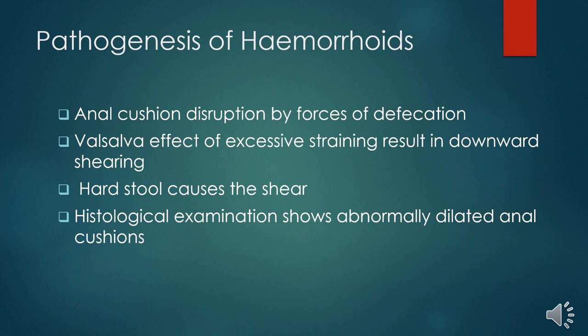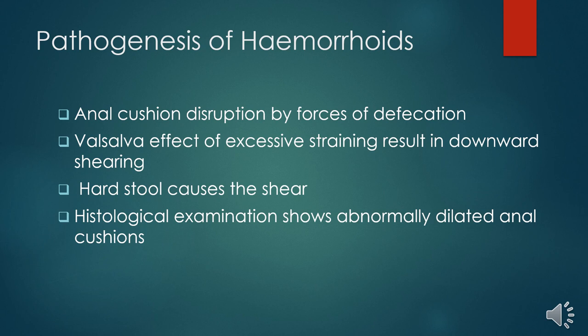So how do hemorrhoids form? Anorectal disruption results from the force of defecation, especially with the passage of hard stools. This causes excessive straining, downward shearing of the anorectum, and hence hemorrhoid formation. On histological examination, when we examine tissue of the anorectum under the microscope, we are able to discover dilated anorectal vessels.